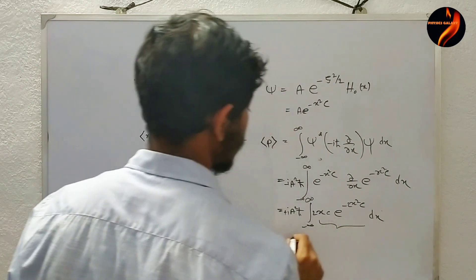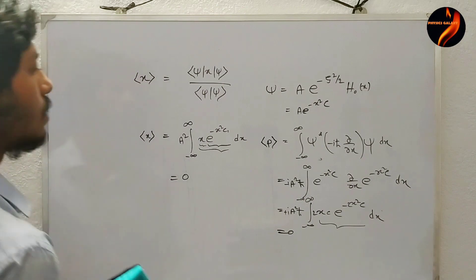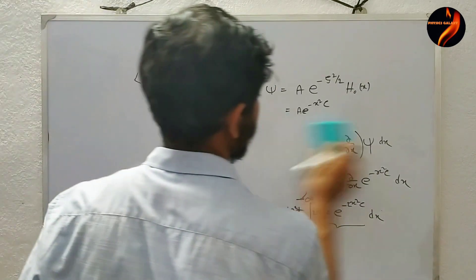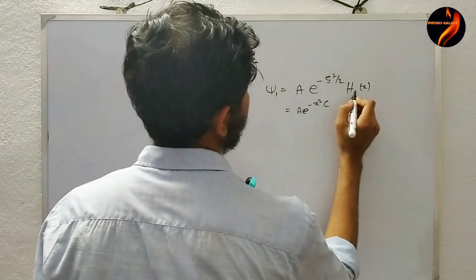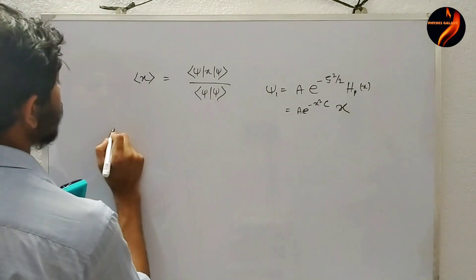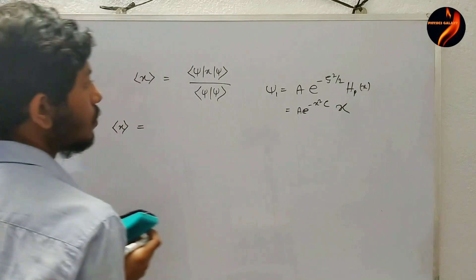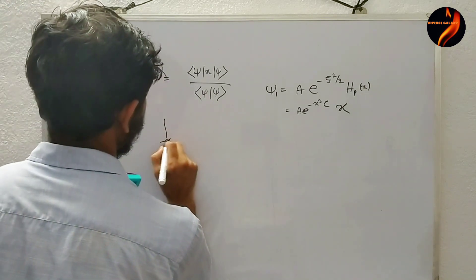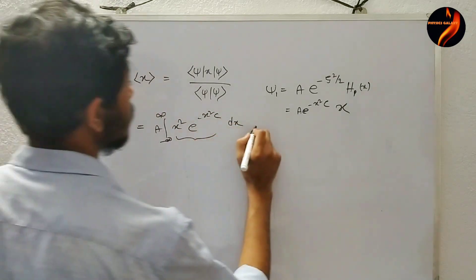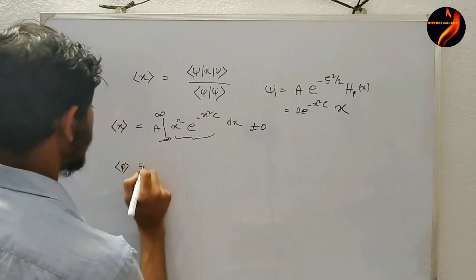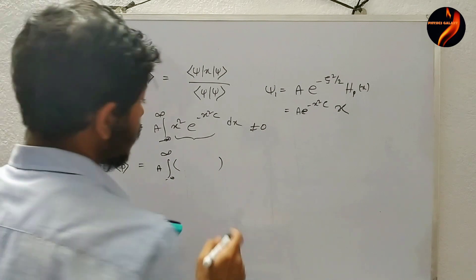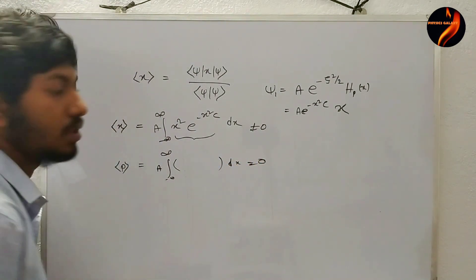Again it is an odd function, so the integral from minus infinity to plus infinity gives zero. They then asked me to write down the wave function of the first excited state. For the first excited state, H_1 equals 1 and there is a factor of x. They asked me to calculate the expectation value of position — in this case the integrand is an even function, so the result is non-zero. However, the expectation value of momentum in the first excited state is again zero, because that integrand gives an odd function.